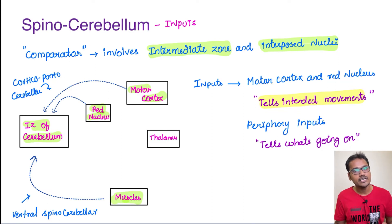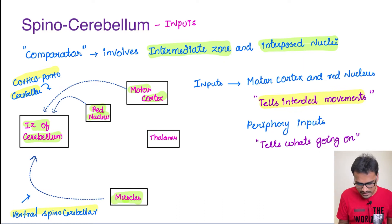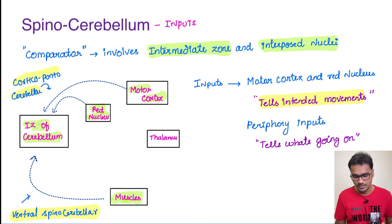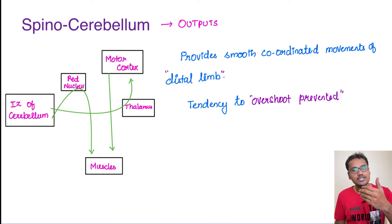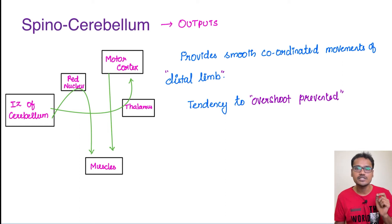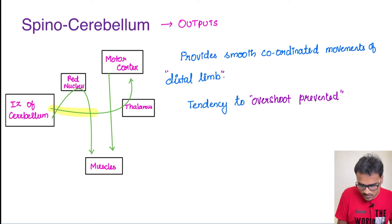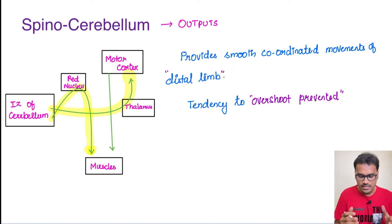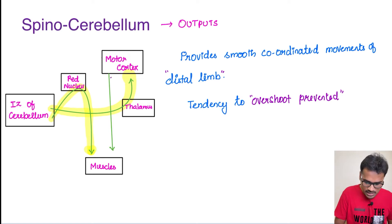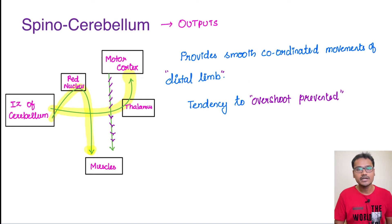For this comparison, two important tracts are used: the corticopontocerebellar tract, which comes from the higher center and gives the efference copy, and the ventral spinocerebellar tract. The cerebellum compares both and sends the required output from the intermediate zone. There are several outputs: if there is a gross error, the motor cortex receives the impulse and changes the action itself. Impulses also go to the muscles via the thalamus, and a second output goes through the red nucleus to the muscles. Minor corrections are directly done by the cerebellum itself.